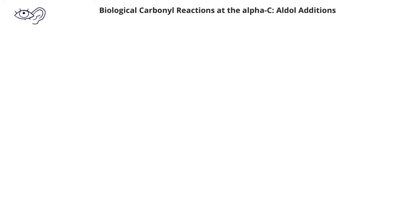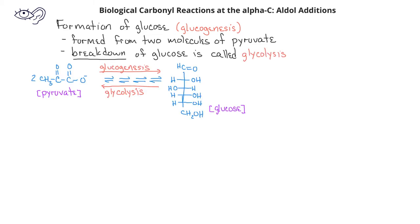Glucose is the most abundant sugar found in nature, and it's synthesized in biological systems from two molecules of pyruvate. The series of reactions that convert two molecules of pyruvate into glucose is called gluconeogenesis. The reverse process, the breakdown of glucose into two molecules of pyruvate, is called glycolysis.